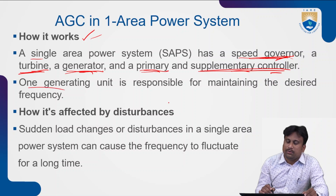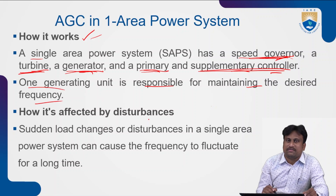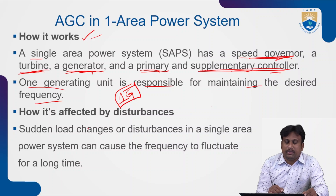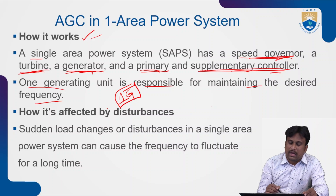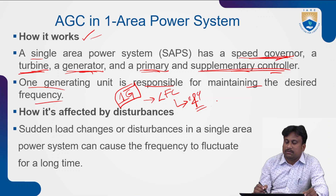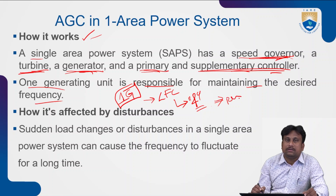One generating unit is responsible for maintaining the desired frequency. We have multiple sections in the power station, and any one generating unit takes responsibility for keeping the desired frequency levels. From the load frequency control (LFC) case we already learned: when frequency levels are maintained as constant, the system operations proceed with the needed results, as expected with the LFC controller.